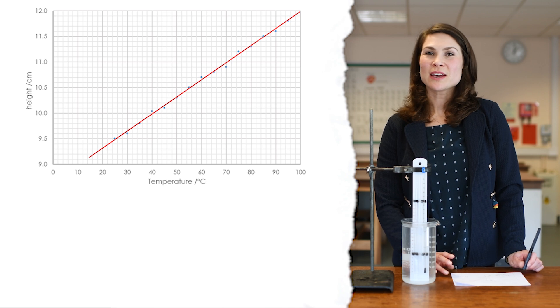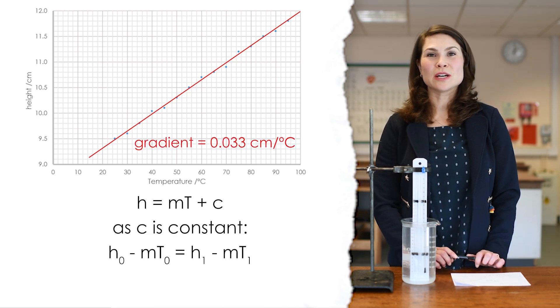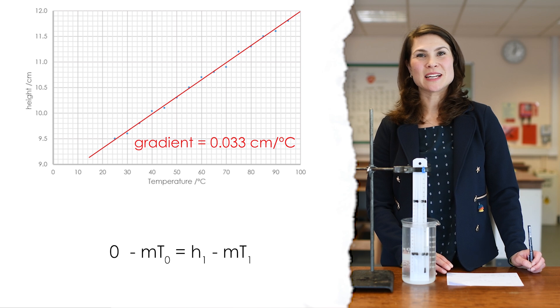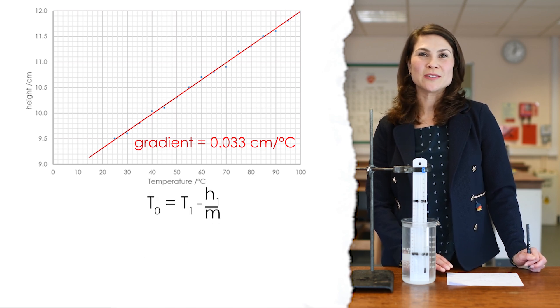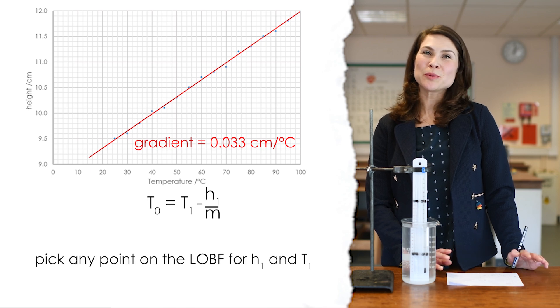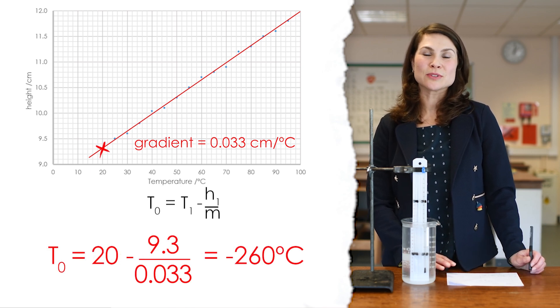Here's the graph that we've drawn. We've calculated the gradient and then we're algebraically able to find a value for absolute zero. Hopefully, you will get a value close to the true value of minus 273.15 degrees Celsius. Of course, it won't be exactly this and you might like to think of the reasons why and the errors involved in the investigation.